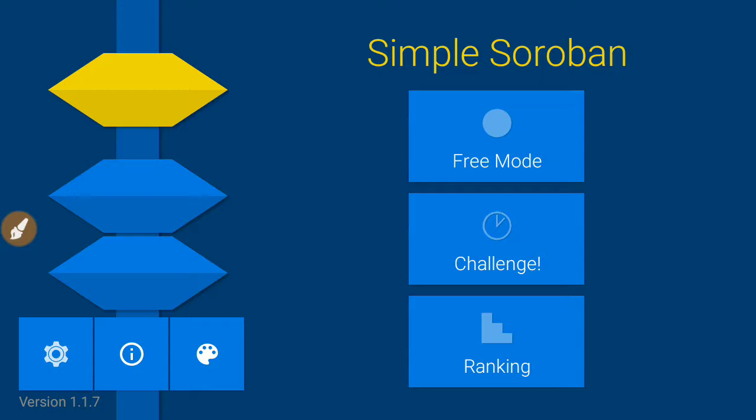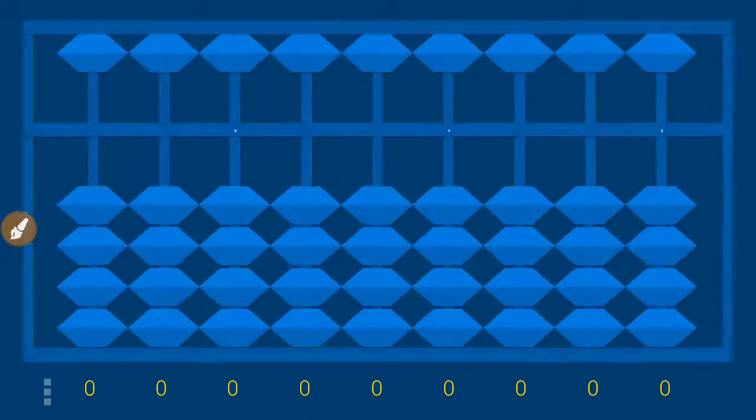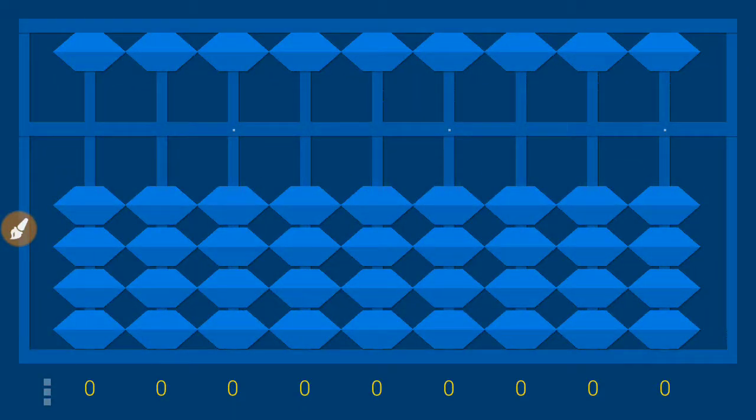This is the first chapter. Today we are going to start, and if you want to continue with the chapters please subscribe. This interface is a simple Soroban — a mobile application made for abacus practice. It is absolutely free, so if you don't have a physical abacus you can practice on it.